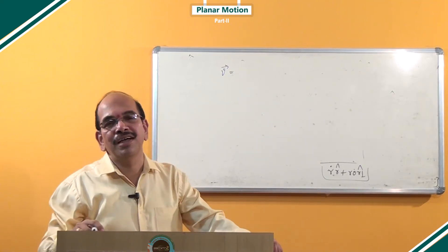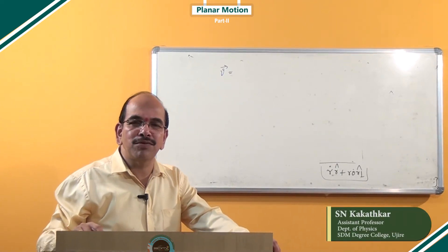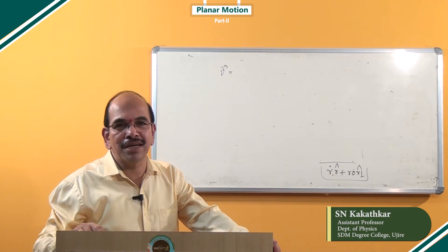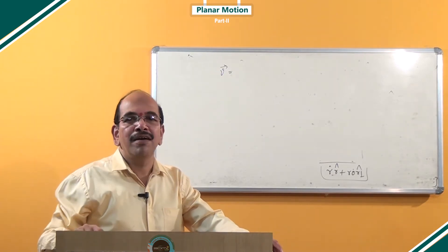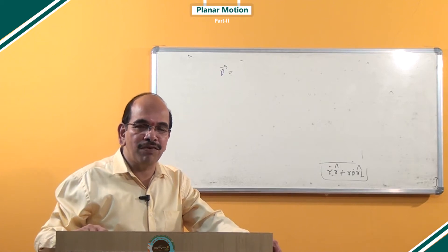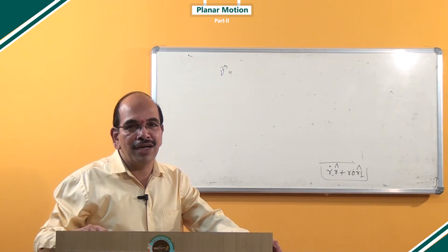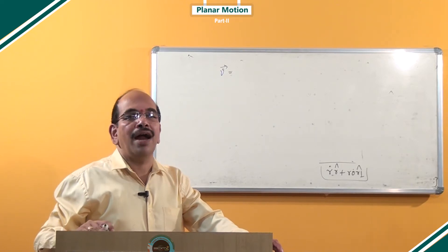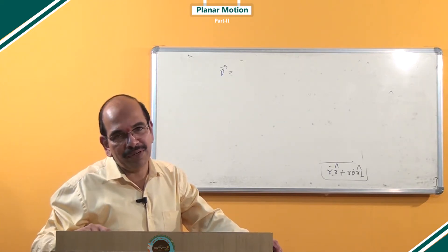Hello friends, in today's class, let us find out the expression for radial and transverse components of acceleration. As we have discussed earlier the radial and transverse components of velocity, similarly we can resolve the net acceleration of the moving particle along two directions. The acceleration along the position vector is called the radial component, and the acceleration along the perpendicular direction is called the transverse component.